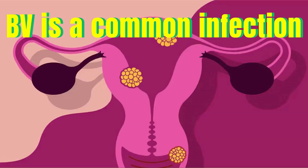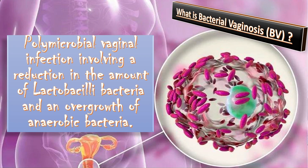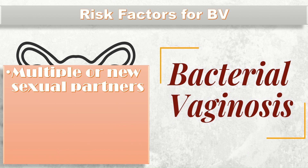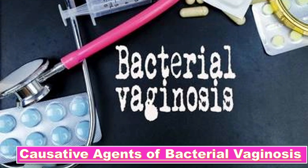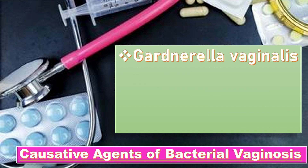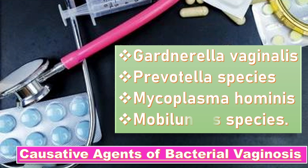Bacterial vaginosis is a common infection of the genital tract. It is a polymicrobial vaginal infection involving reduction in the amount of lactobacilli bacteria and an overgrowth of anaerobic bacteria. Risk factors include multiple or new sexual partners, orogenital sex, smoking, and genetic predisposition. BV is characterized by an overgrowth of predominantly anaerobic organisms like Gardnerella vaginalis, Prevotella species, Mycoplasma hominis, and Mobiluncus species.